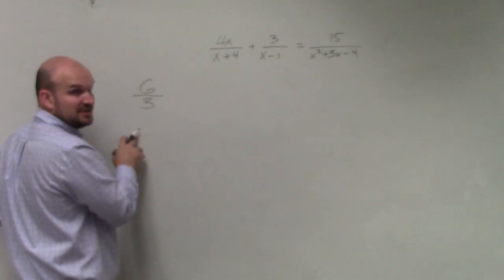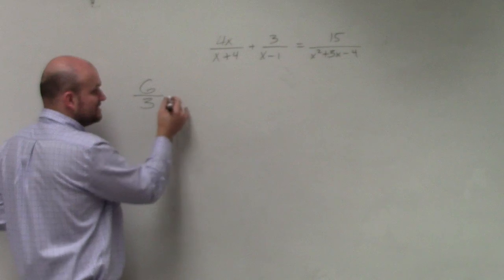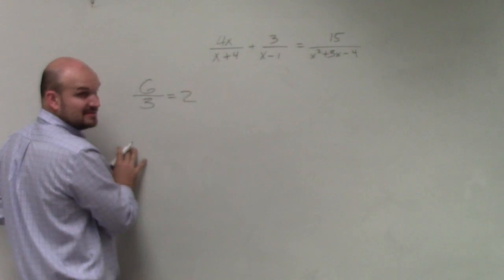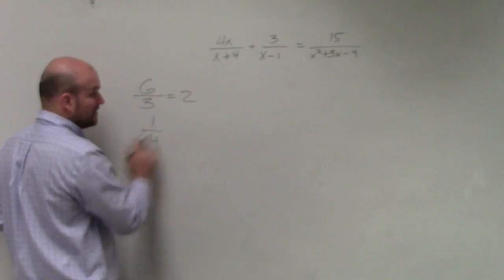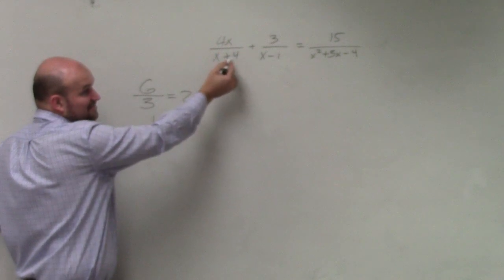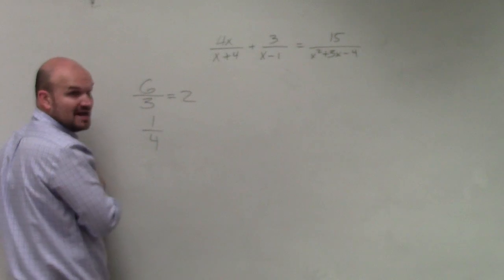We can eliminate this fraction by just dividing the 3 into the 6, right? However, sometimes we can't divide the denominator into the numerator. For instance, x plus 4 does not evenly divide into 4x, correct?